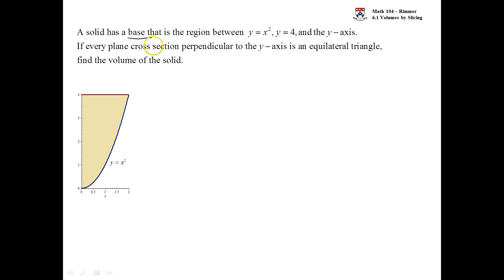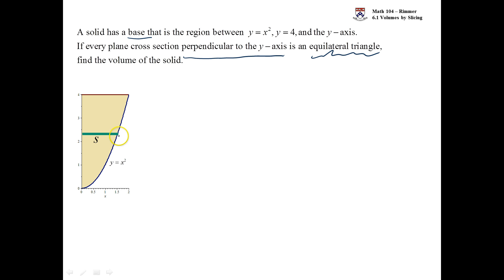Every plane cross-section perpendicular to the y-axis is an equilateral triangle. When we draw the base of the equilateral triangle, it goes from the y-axis out to the curve. Coming out of the screen is an equilateral triangle. Here's a picture of what three of those would look like.